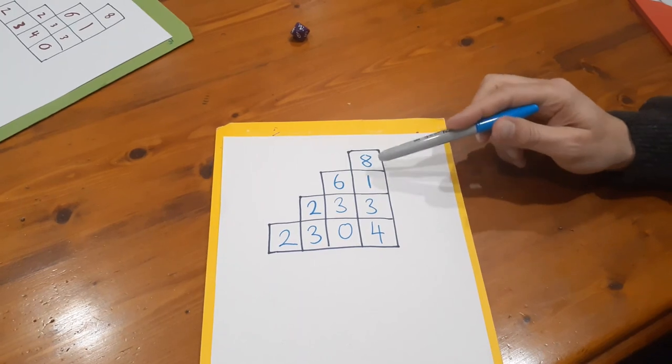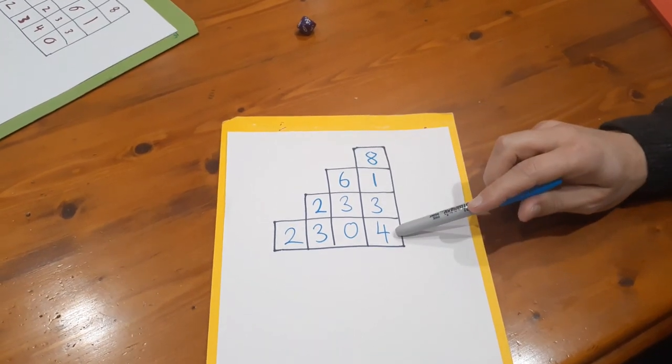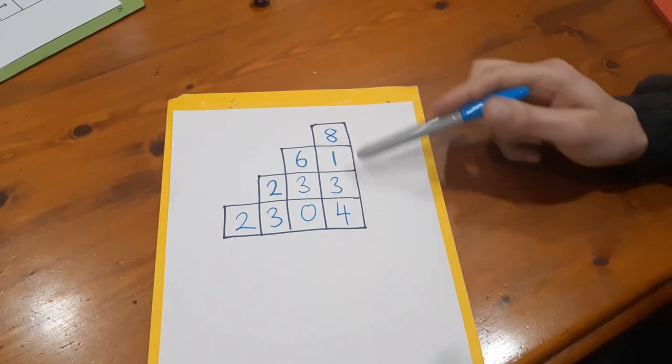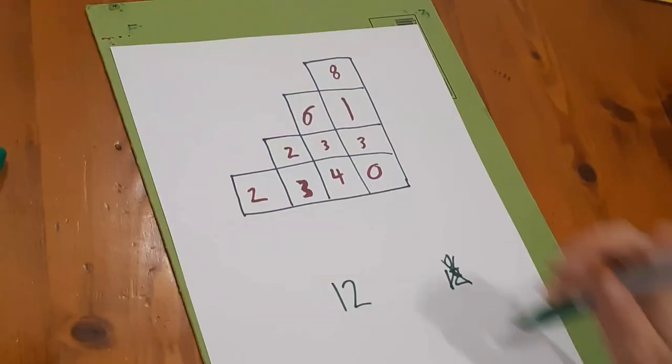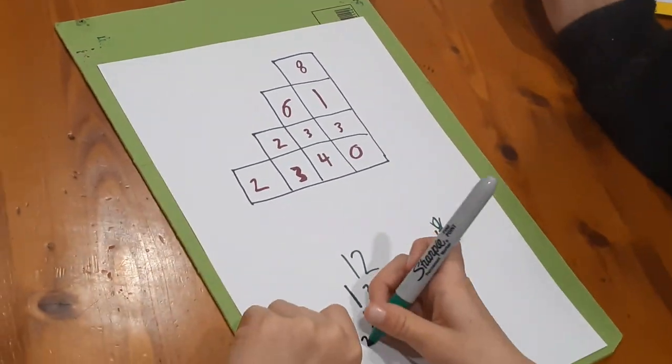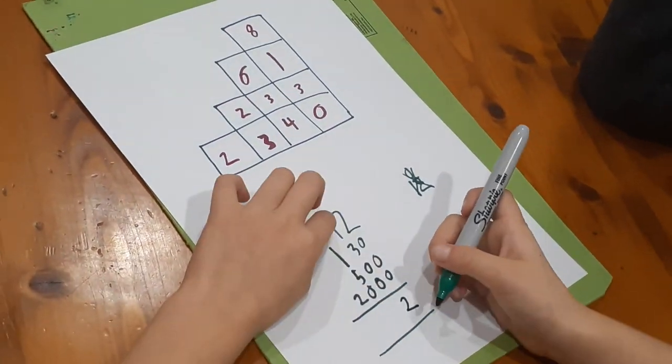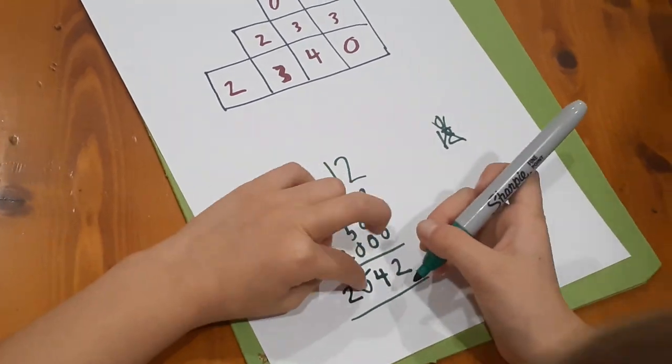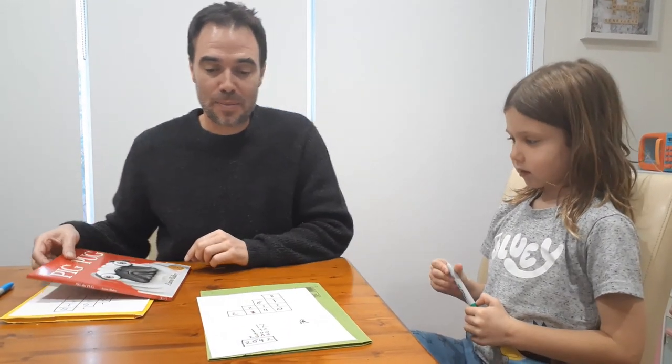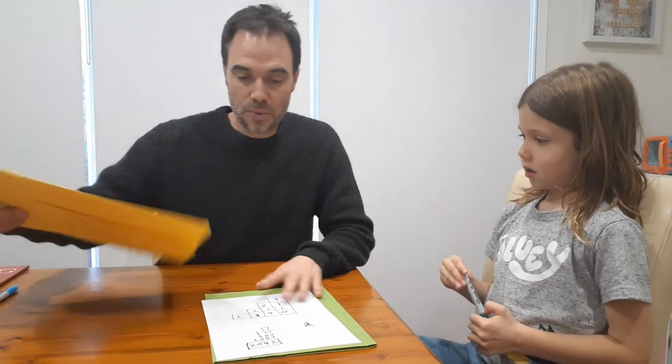So once we've filled out each of the four rows, now the final part of the game is you need to add up your four numbers to get your total. Okay, so Nash has done his adding up and I've added up mine in a different way.